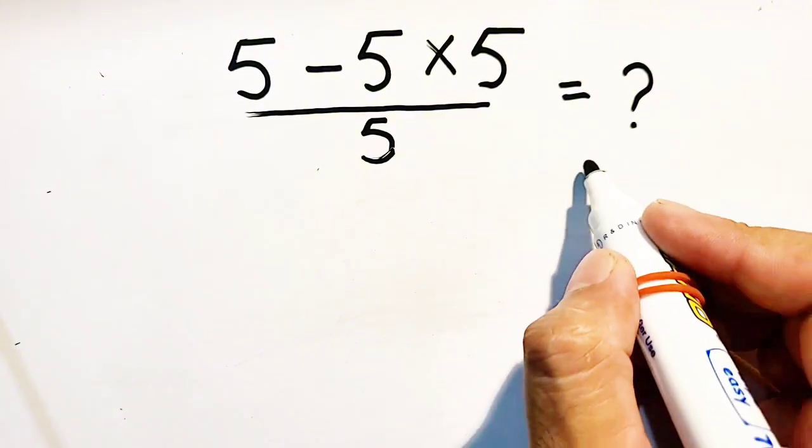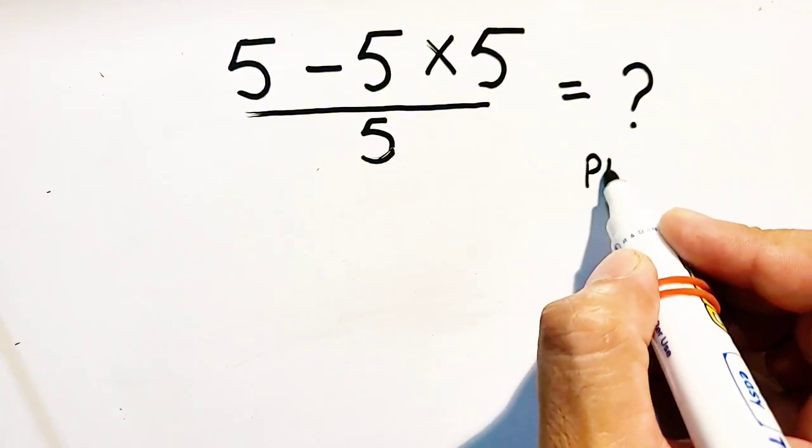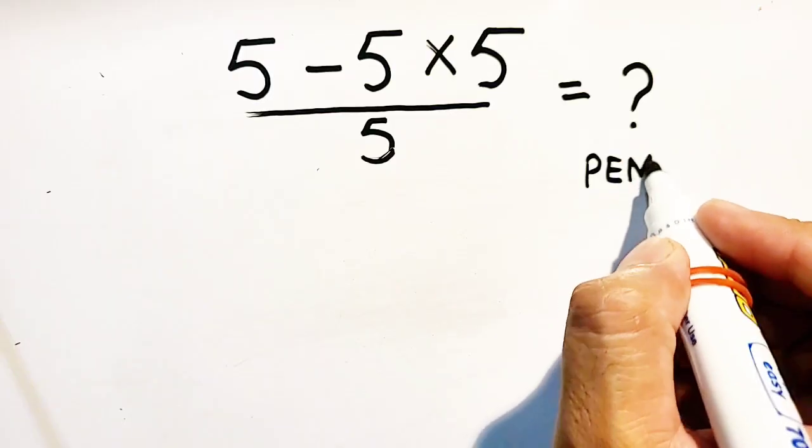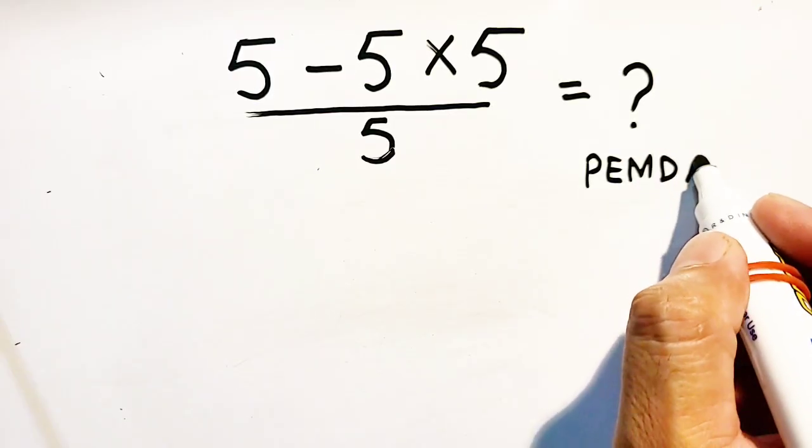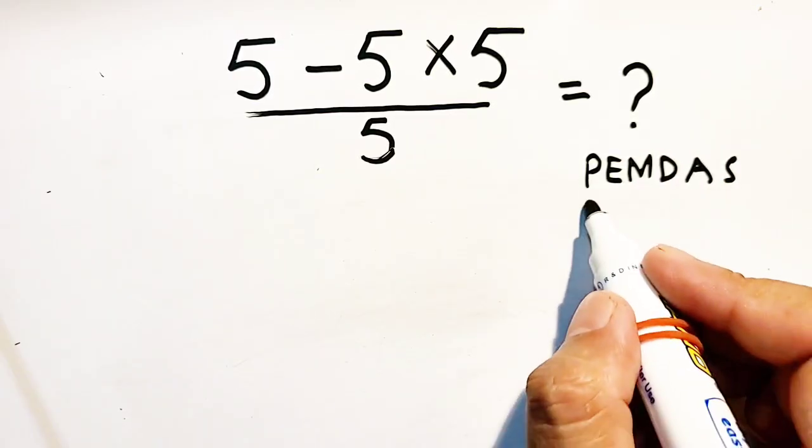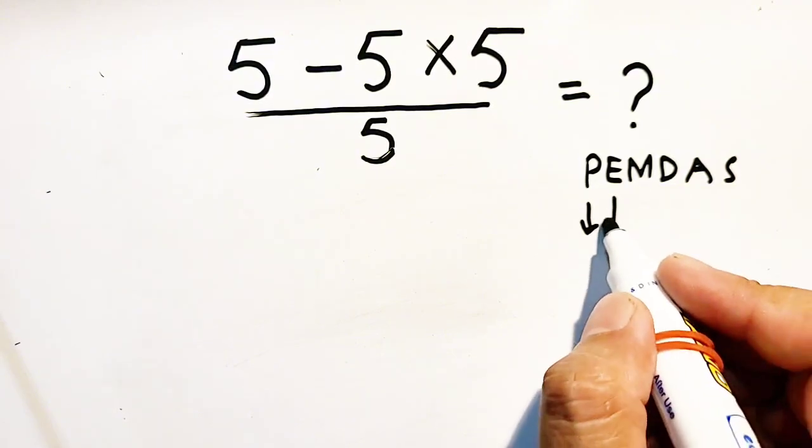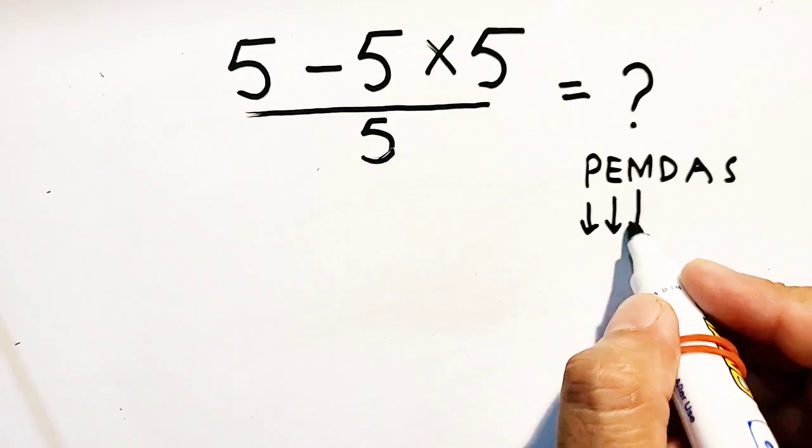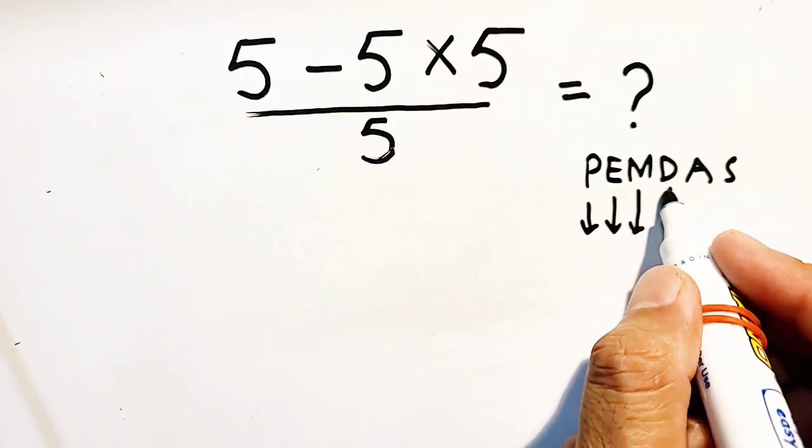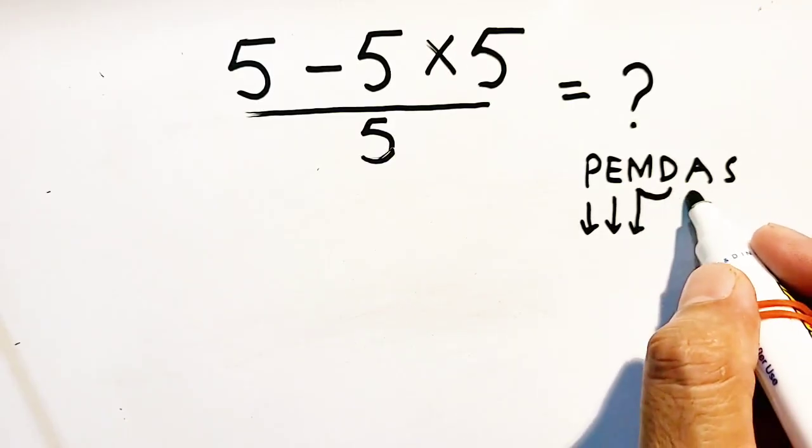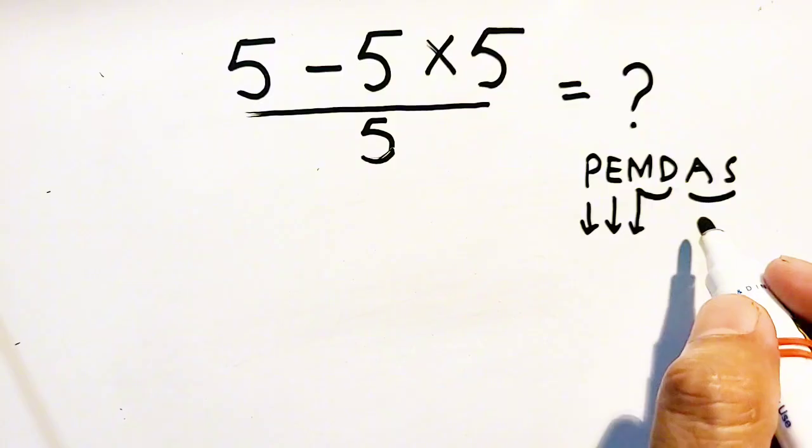you should be aware of PEMDAS RULE. P stands for parenthesis, E for exponent, M for multiplication and division, and addition and subtraction.